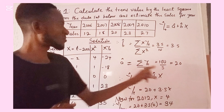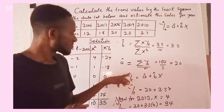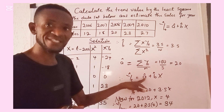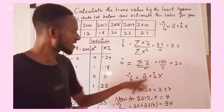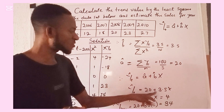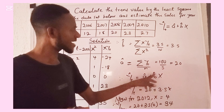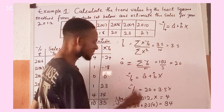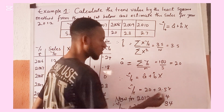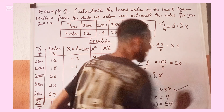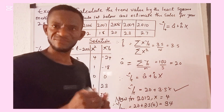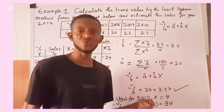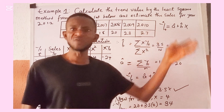So y-cap subscript t is now 20 plus 3.5x, where 20 is the intercept and 3.5 is the slope. Therefore, y-cap subscript t equals 20 plus 3.5x is our trend line, or time series equation. It is with this equation that you will be able to make a prediction of the future values of this series.